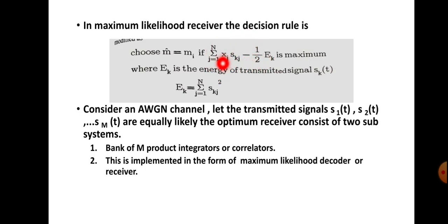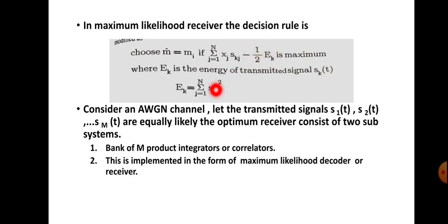The operation in the second section follows the maximum likelihood rule: the observation vector and signal vector are multiplied and their inner product is computed via summation. Then minus one-half e-K is subtracted, where e-K is the energy of the signal. This is the inner product of the signal vectors, and the energy is subtracted from it.